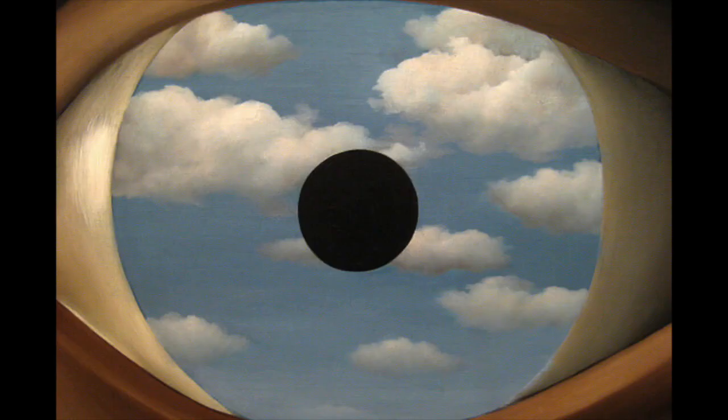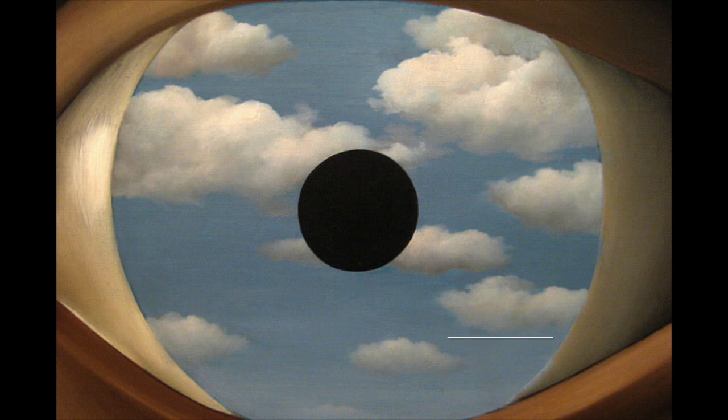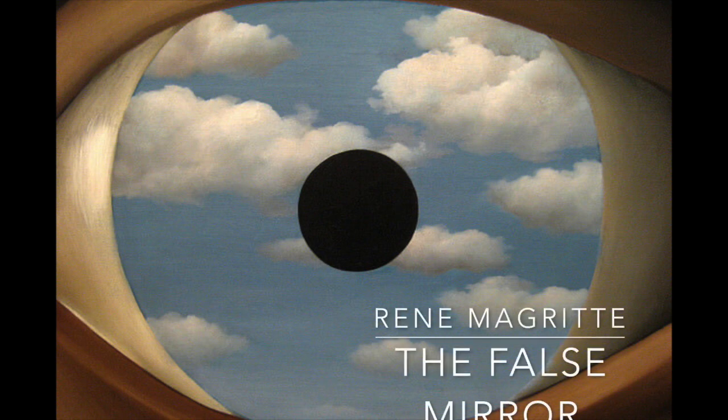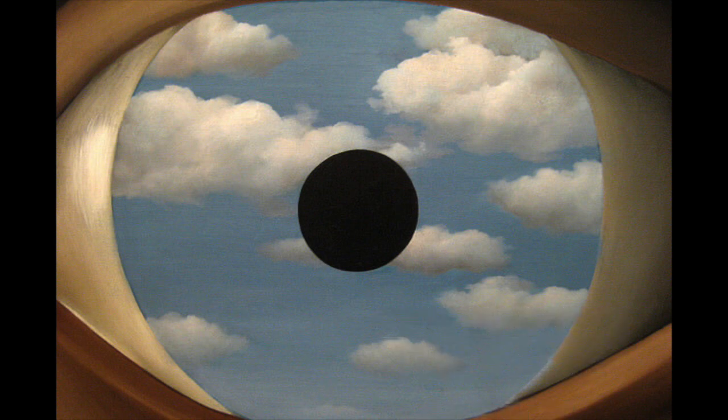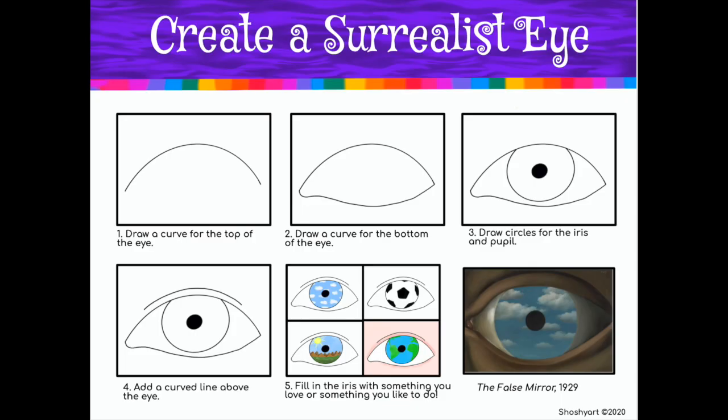This artwork by Rene Magritte is called The False Mirror. This is what we're going to be recreating today in our own way. This is the basic steps of how we are going to create our Surrealist eye, so let's get started.